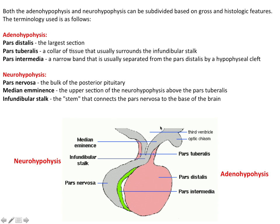The structure of the pituitary gland: the anterior lobe, adenohypophysis, has three parts — pars tuberalis, pars distalis, and pars intermedia. The neurohypophysis is also made up of three main parts: the median eminence, infundibular stalk, and pars nervosa.